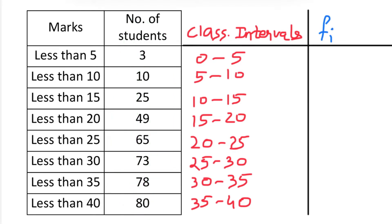According to the cumulative frequency, there are 3 students who scored less than 5 marks, so the frequency for the class interval 0 to 5 remains 3. There are 10 students who scored less than 10 marks. We don't want the students who scored less than 5, so we subtract 3 from 10, giving the second frequency as 7.